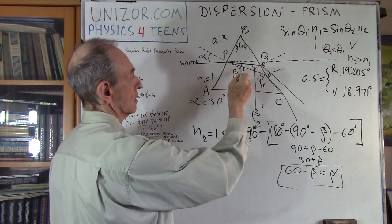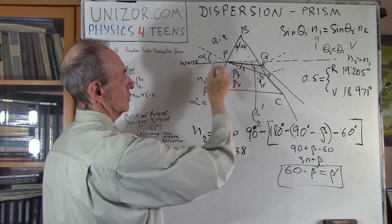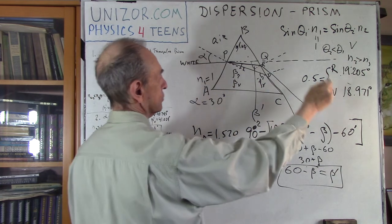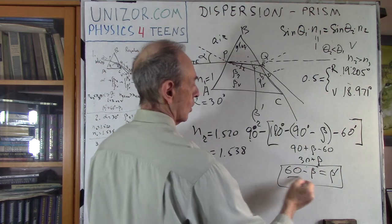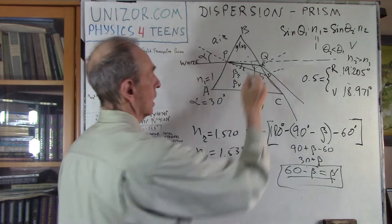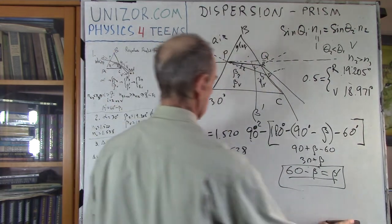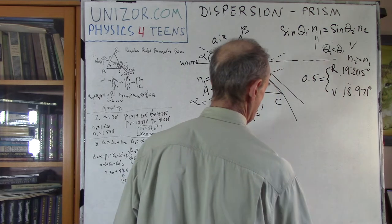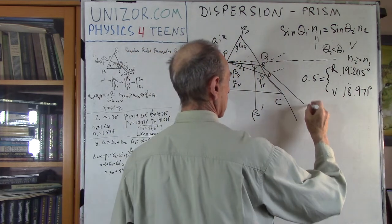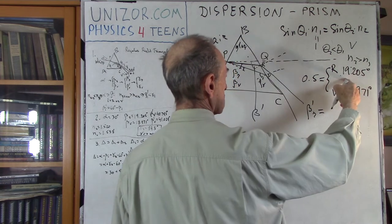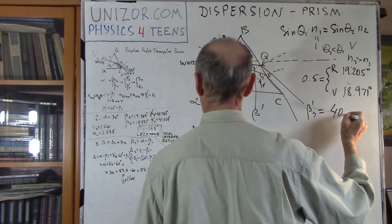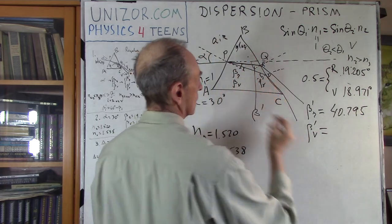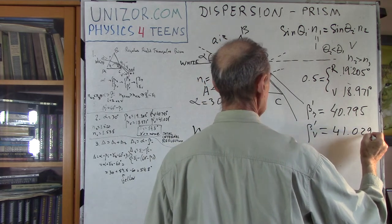Knowing beta R and beta V, we can find the angles of incidence on the second surface. Beta prime R = 60 minus 19.205 = 40.795 degrees, and beta prime V = 60 minus 18.971 = 41.029 degrees. Now we apply the law of refraction again — this time with n₁ around 1.5 for glass (1.520 for red, 1.538 for violet) and n₂ = 1 for the outgoing air.